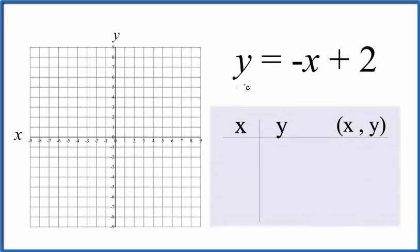Here's how you graph the linear equation y equals negative x plus 2. First we'll use a table of values to graph the equation, and then we'll look at slope-intercept formula.